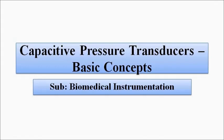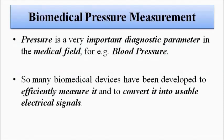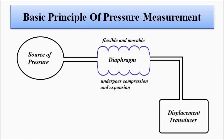We know that pressure measurement involves the basic principle of using a displacement transducer to measure the pressure and to give an output in terms of voltage and current. The main component or primary sensing element in this case is the diaphragm, which is connected to the source of pressure — the body part — at one end, and the other end is connected to the displacement transducer.